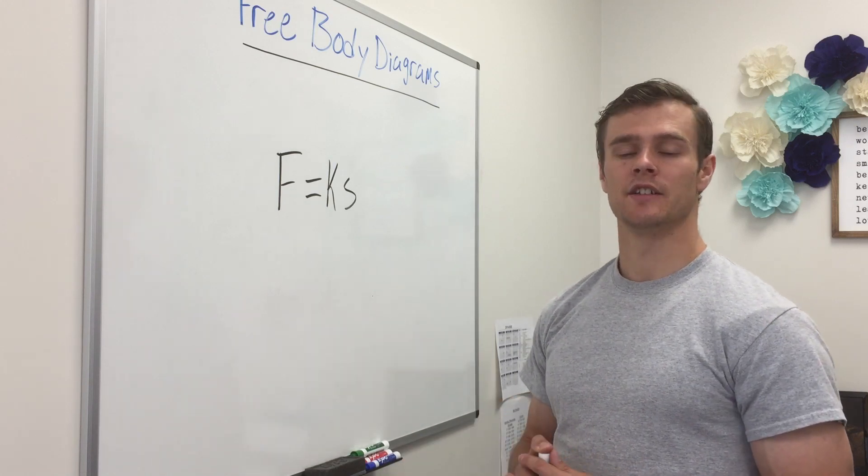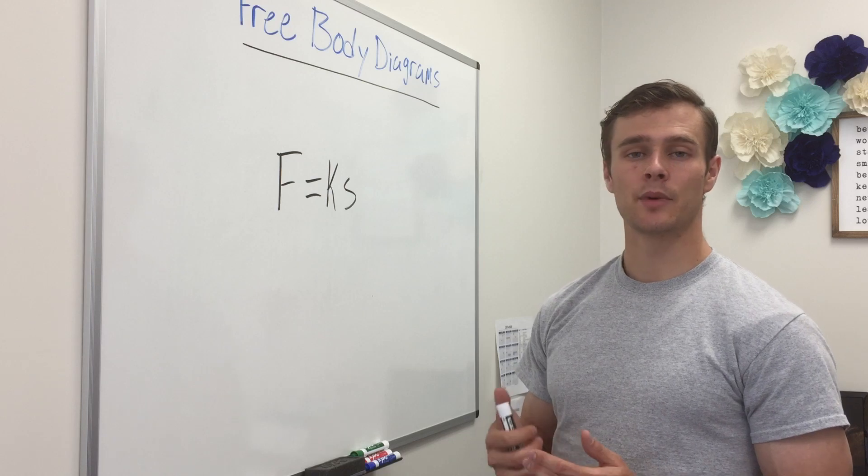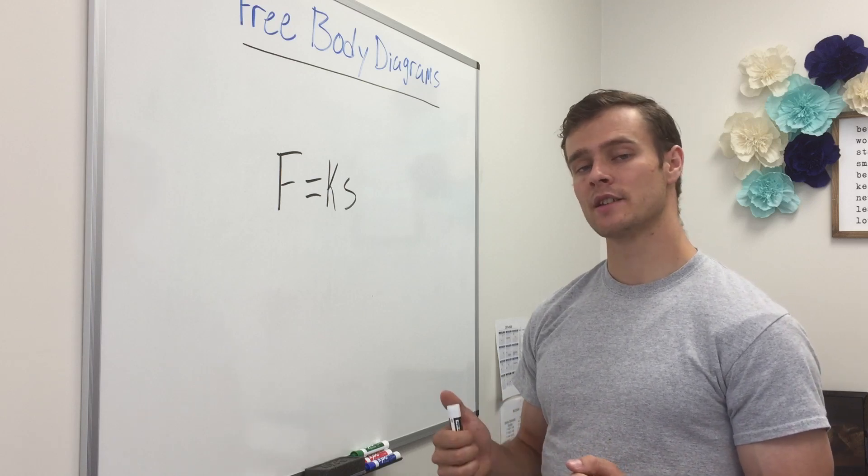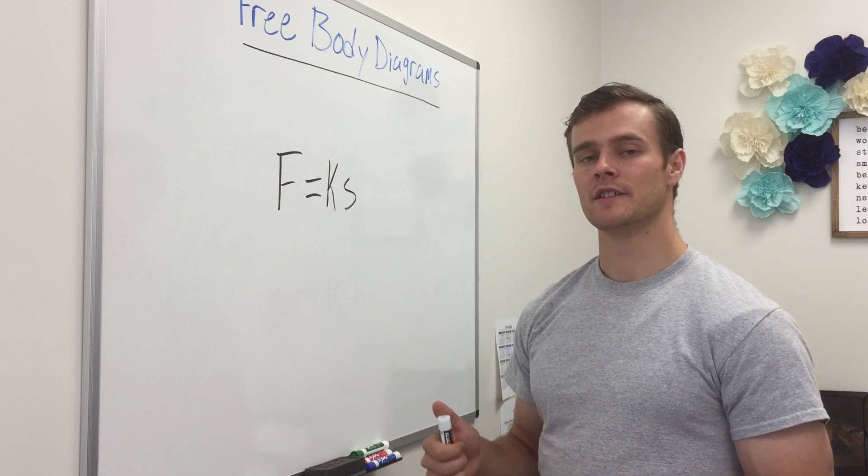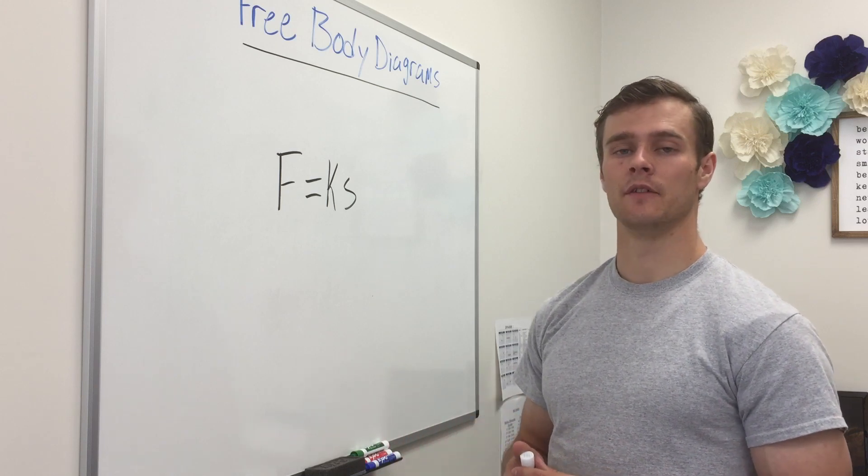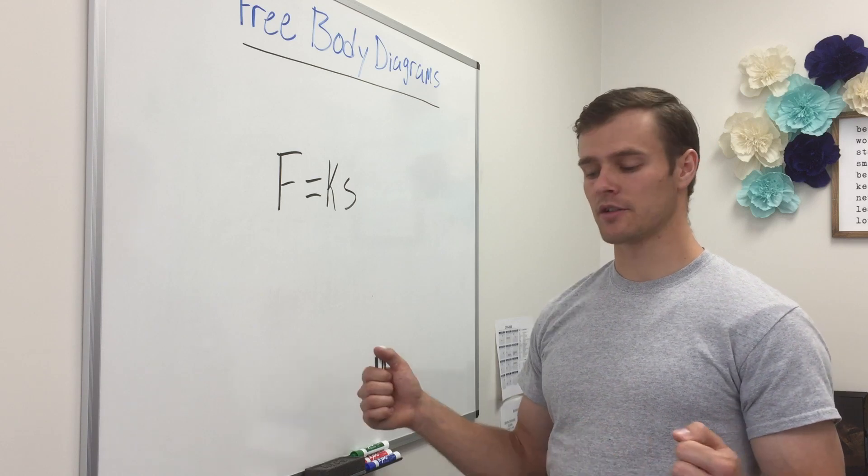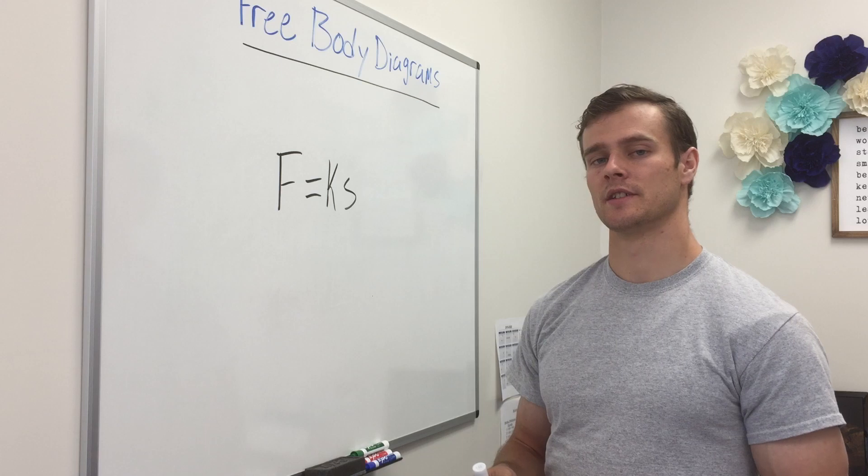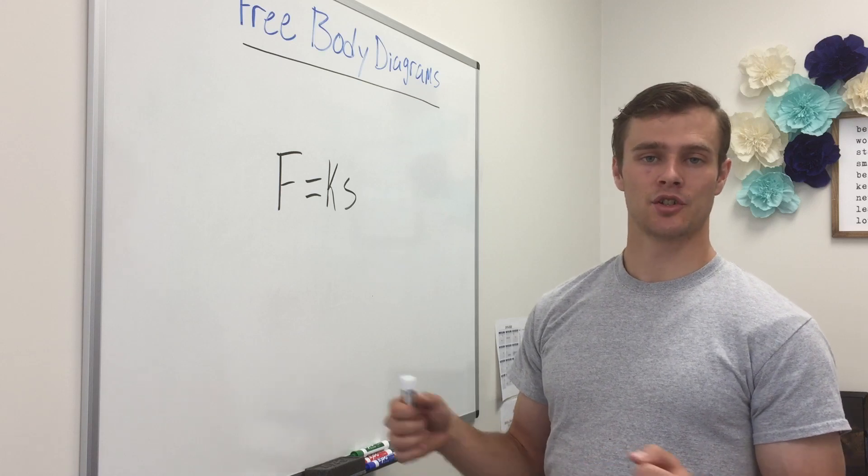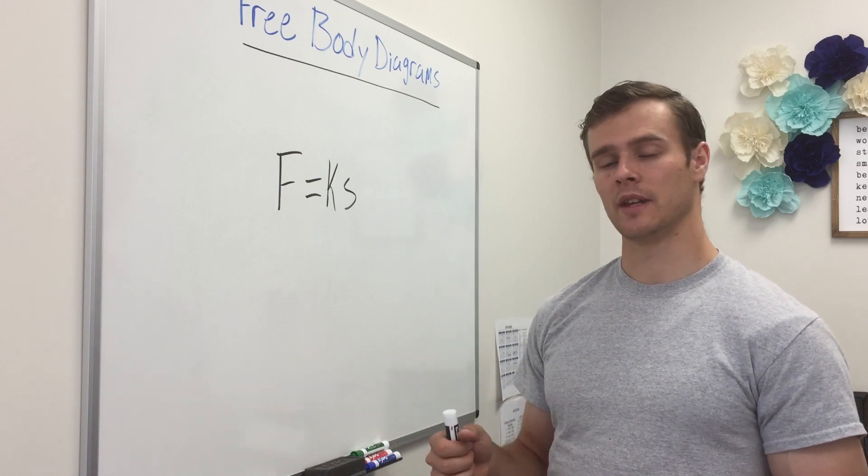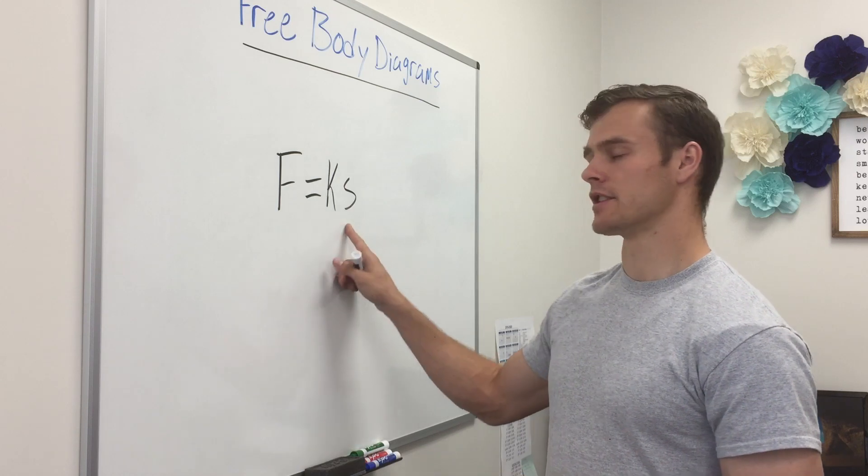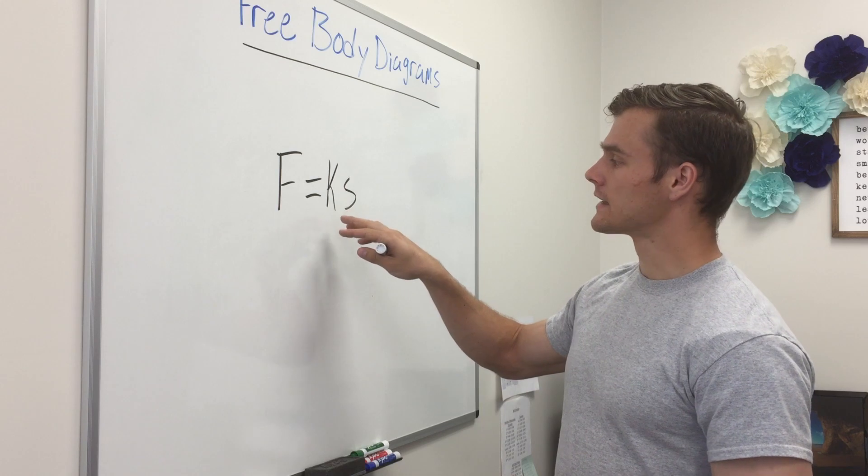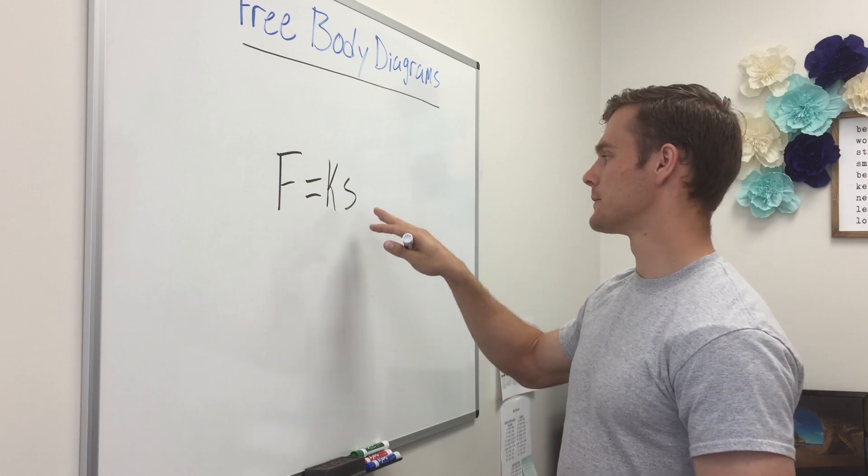So s is the change in length of the spring. A spring when it is in its equilibrium position isn't being compressed or stretched. So say if we have a spring of length 10 inches, if we stretch it out to be 15 inches its change in length is 5 inches because you subtract its stretch length by its equilibrium length and you get its change in length. So the force caused by springs is its k value times its change in length.